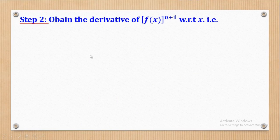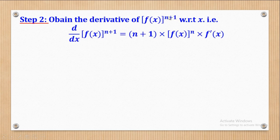Step two is to obtain the derivative of f(x) raised to the power n plus one. This is why we first increase the power by one — because when we differentiate, we reduce the power by one so that it returns to the original power. When we differentiate using the chain rule, we bring down the power n plus one, reduce it by one to get f(x) raised to the power n, and then differentiate the inner bracket, giving f prime of x.